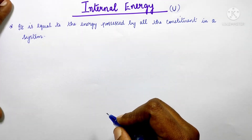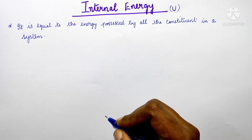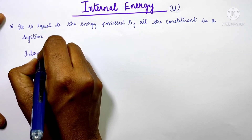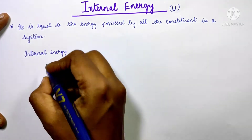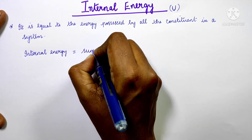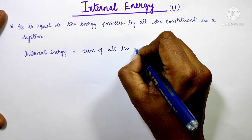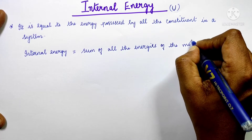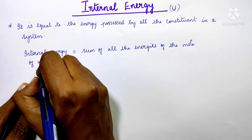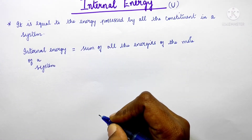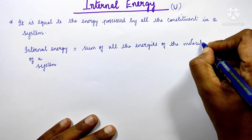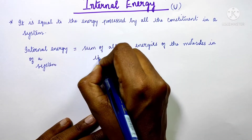How do we calculate internal energy? It is the total energy of all molecules present in a system. So whatever is in the system — the molecules in the system — the total energy of those molecules is what we call internal energy.